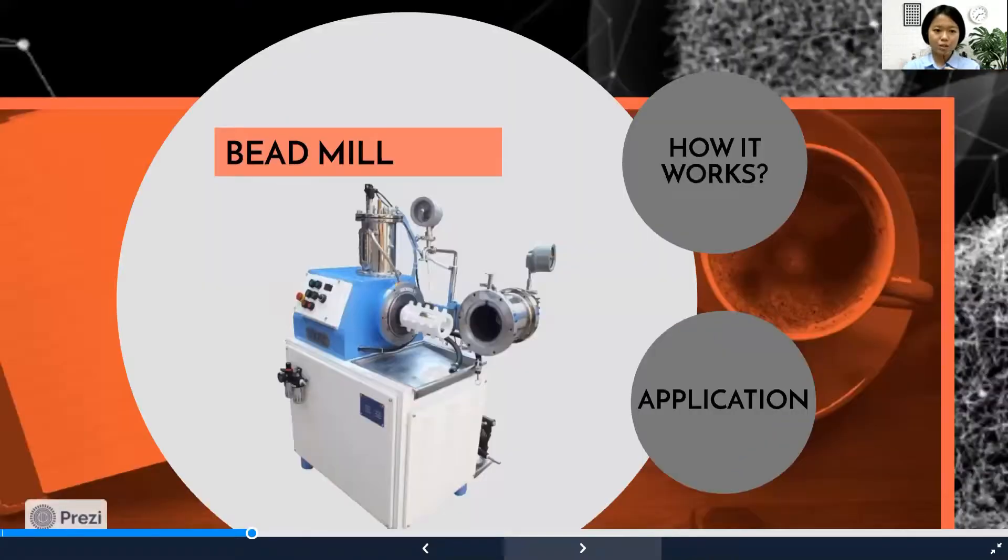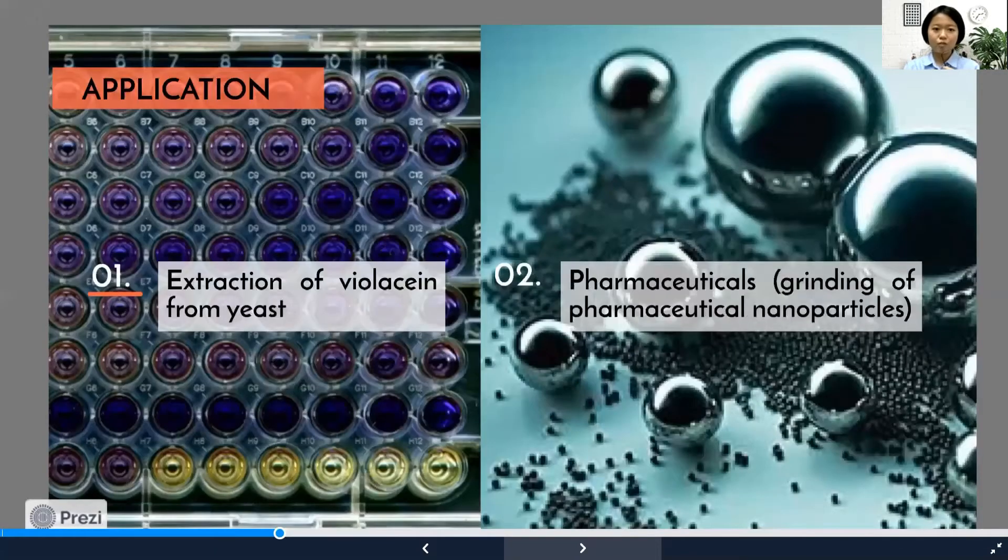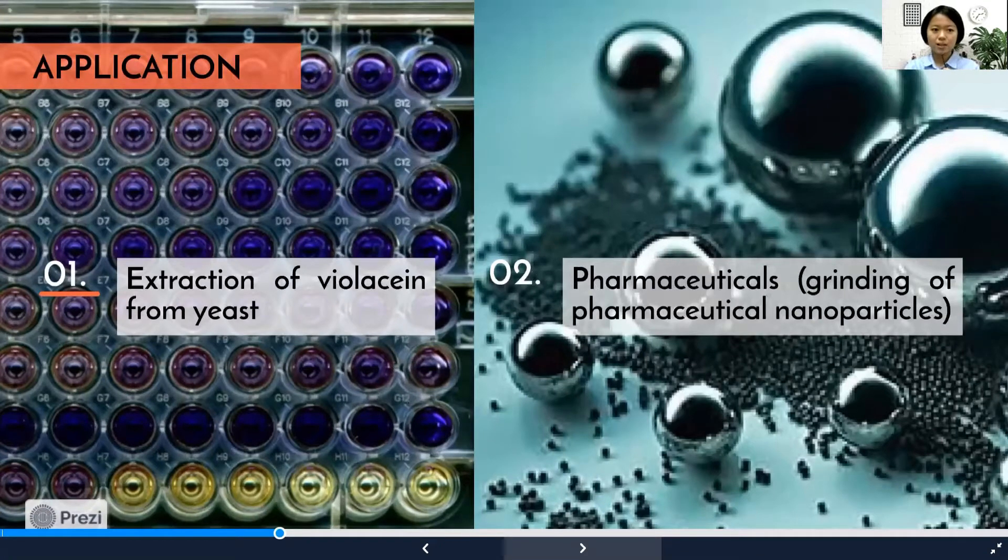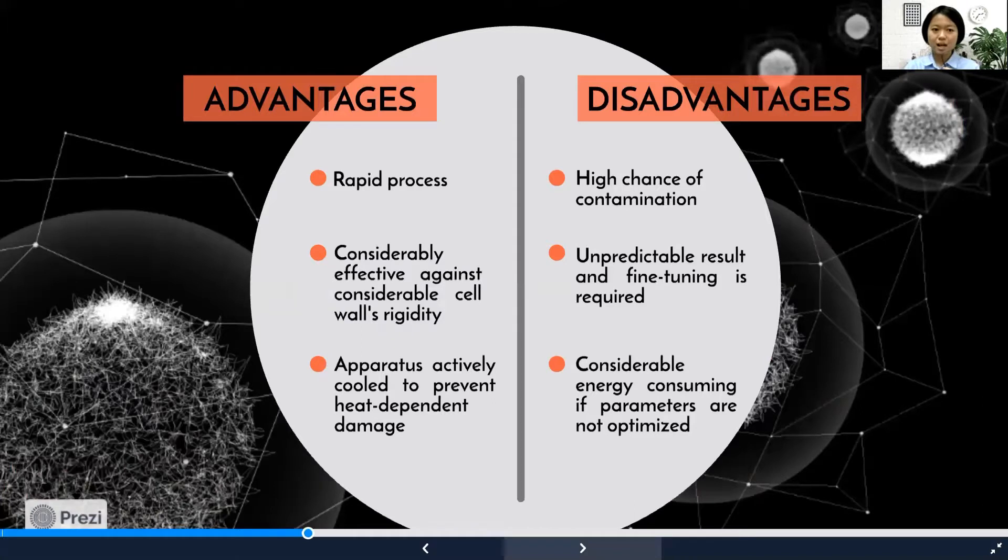Applications include extracting organelles from yeast and use in the pharmaceutical field for grinding pharmaceutical nanoparticles. Advantages are that it is a rapid process, effective against cell walls with rigidity, and the apparatus can be actively cooled to prevent heat-dependent damage to the product. Disadvantages are high chance of contamination, unpredictable results, fine tuning is required, and it can consume considerable amounts of energy if parameters are not optimized.